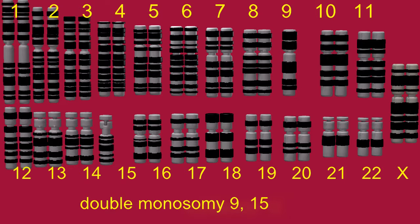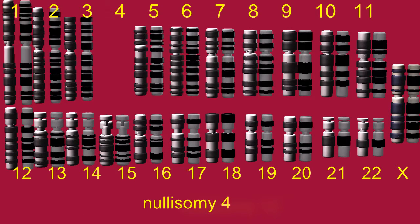A cell which is lacking both homologous copies of the same chromosome is described as a nullosomy. A cell with nullosomy 4 is missing both copies of chromosome 4.